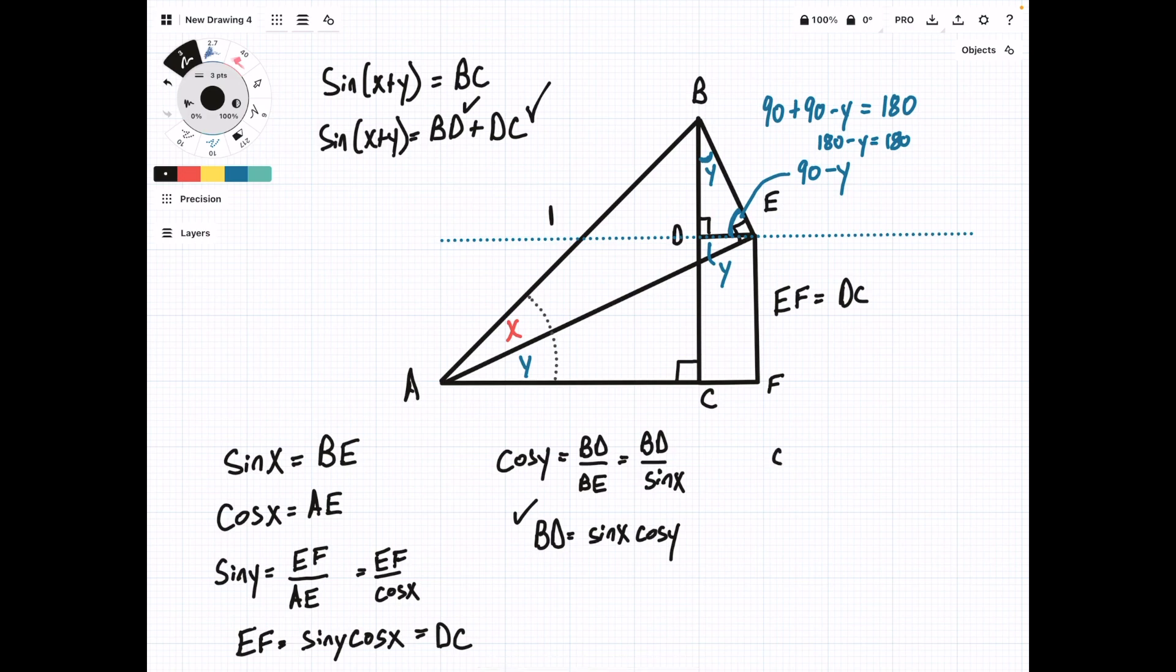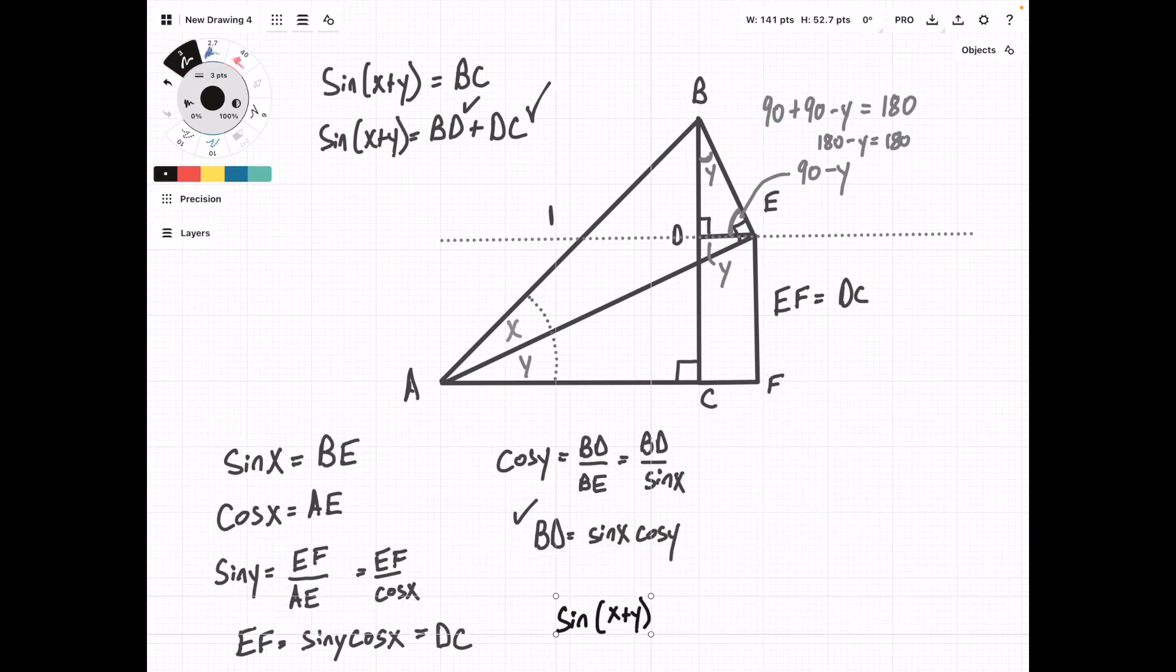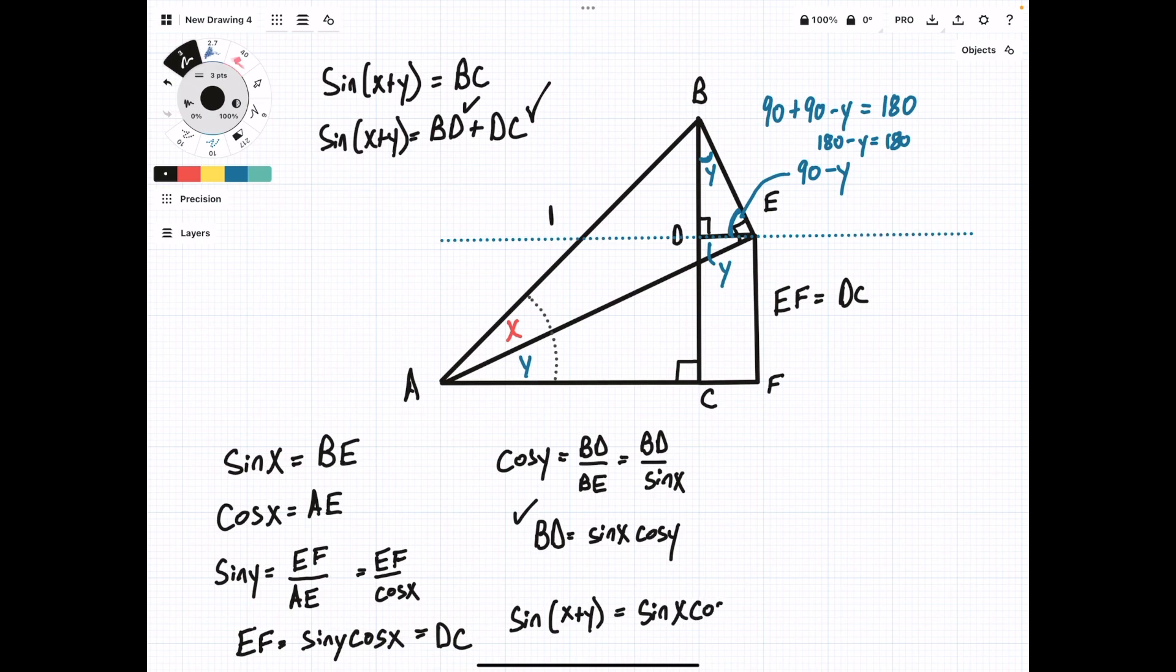Now, if we just bring it down and sub in the two lengths, we'll get sine of X plus Y. Let's do it over here. Sine of X plus Y equals sine of X cosine of Y plus our length DC over here, sine of Y cosine of X. And this is the sum formula for sine.